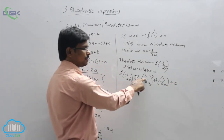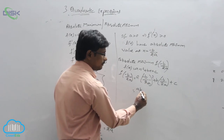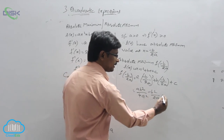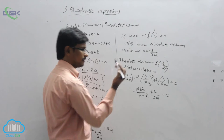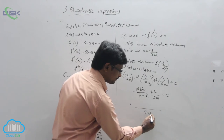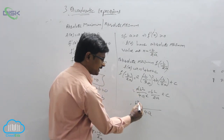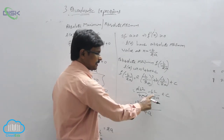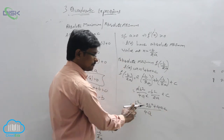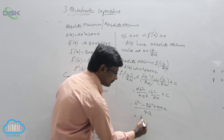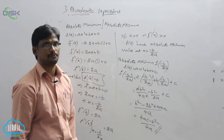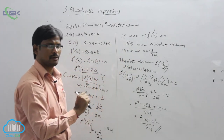Just simplification: minus b whole squared is b squared, so we get a times b squared by 4a squared, minus b squared by 2a, plus c. The a cancels, giving b squared by 4a. For 4a and 2a the LCM is 4a. So b squared minus 2 times 2b squared plus 4ac, giving b squared minus 2b squared equals minus b squared. So the result is 4ac minus b squared by 4a. This is the absolute minimum value when a is greater than 0.